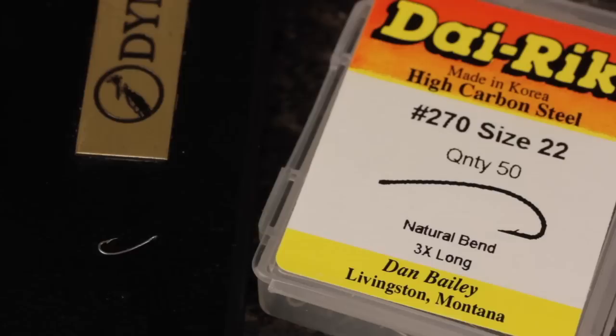Although any nymph hook will do, I really like the look of the Dairiki No. 270, because it looks just plain sexy. There, I said it. Anyway, this one's a size 22.